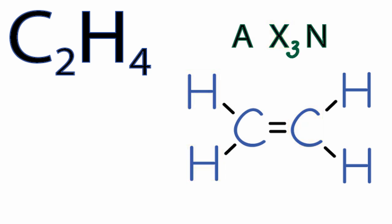N represents the non-bonding electron pairs. We don't have any non-bonding pairs on that carbon—they're all involved in bonds. So that leaves us with AX3.